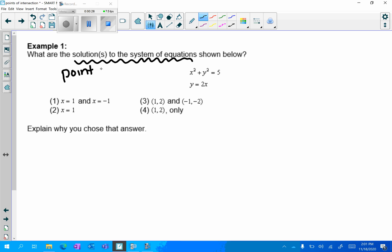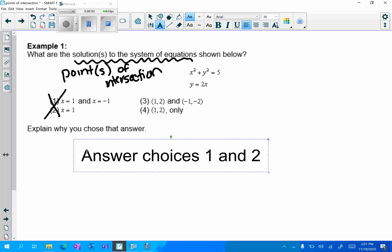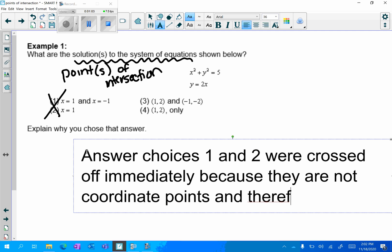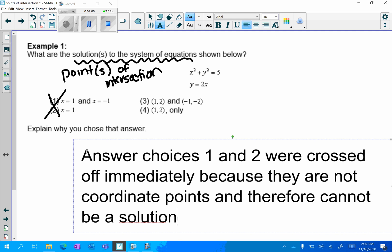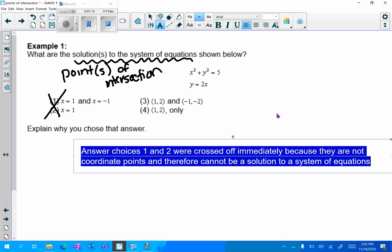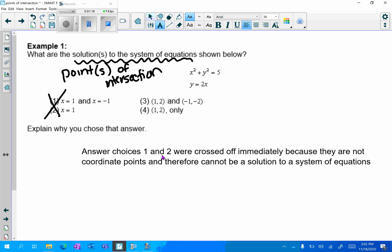So automatically I am going to cross off choices one and two. This is a multiple choice but it's asking you to explain that answer. So I'm going to start my explanation by saying answer choices one and two were crossed off immediately because they are not coordinate points and therefore cannot be a solution to a system of equations. We'll come back and add to this later once we decide if it is choice three or choice four.